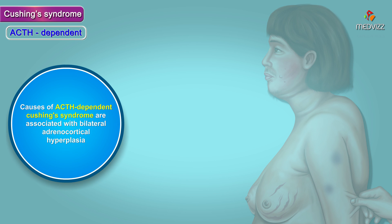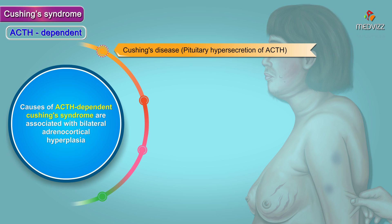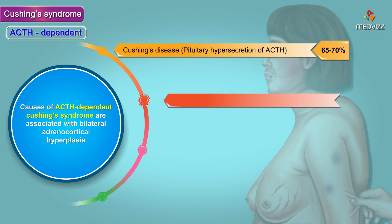ACTH dependent. The causes of ACTH dependent Cushing syndrome are associated with bilateral adrenocortical hyperplasia. Their relative frequency is as follows. Cushing's disease: pituitary hypersecretion of adrenocorticotropic hormone accounts for 65 to 70 percent of all Cushing syndrome.